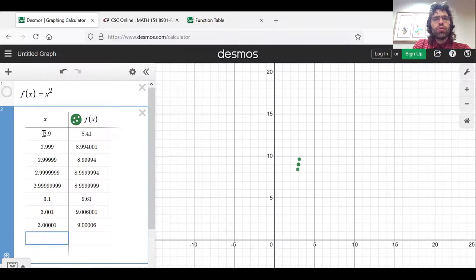So here we start below 3, and increase towards it. Here we start above 3, and we are decreasing towards it.